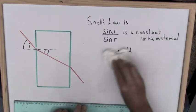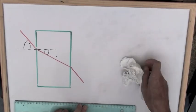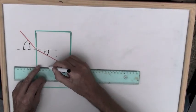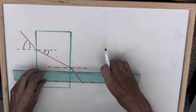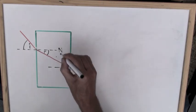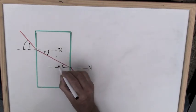If we quickly rub this out and look at the ray of light as it leaves the block, it speeds up and bends away from the normal. We have a new angle of incidence that's inside the glass and a new angle of refraction outside the glass.